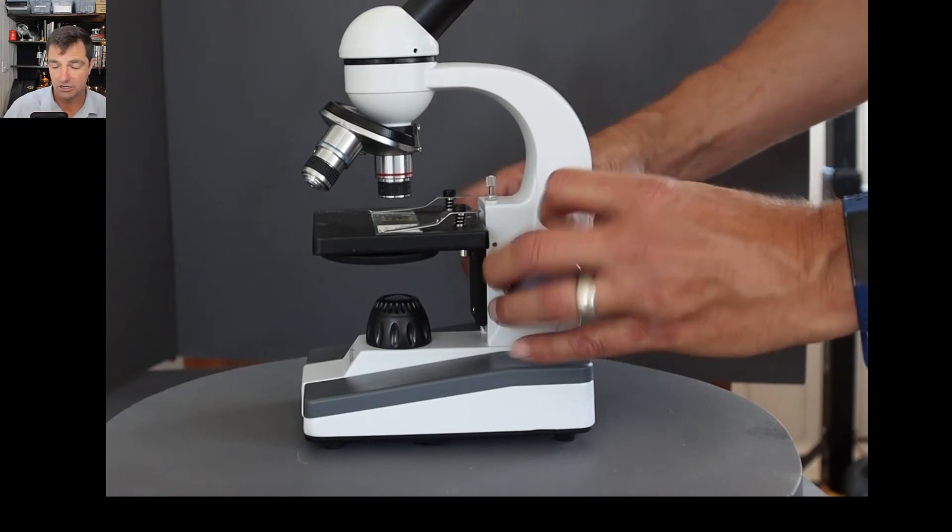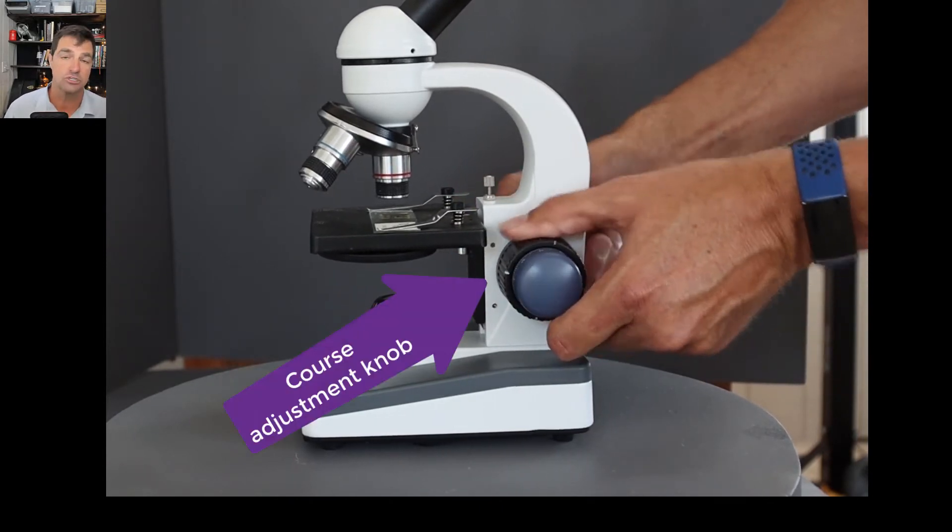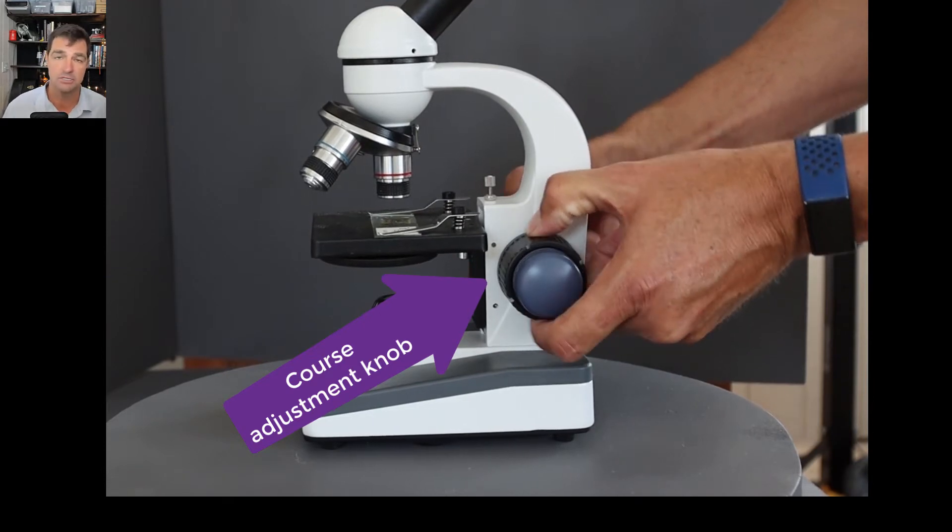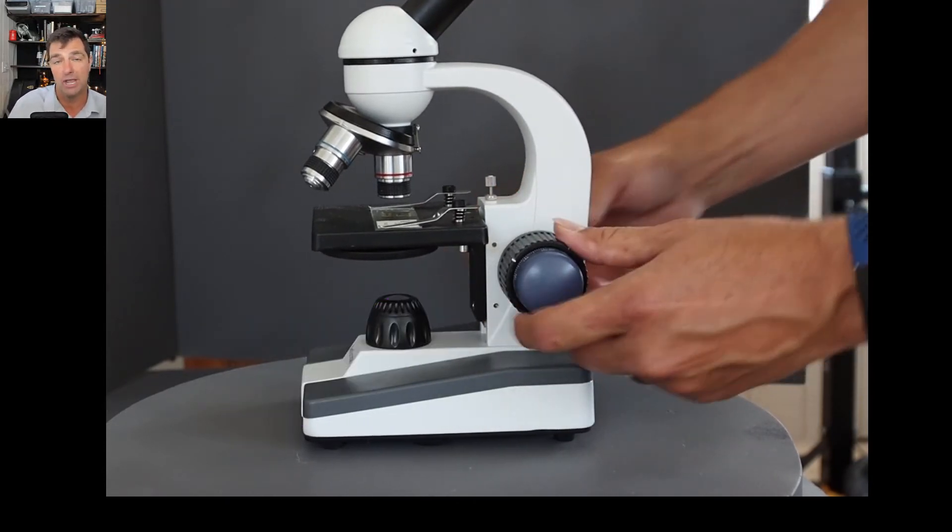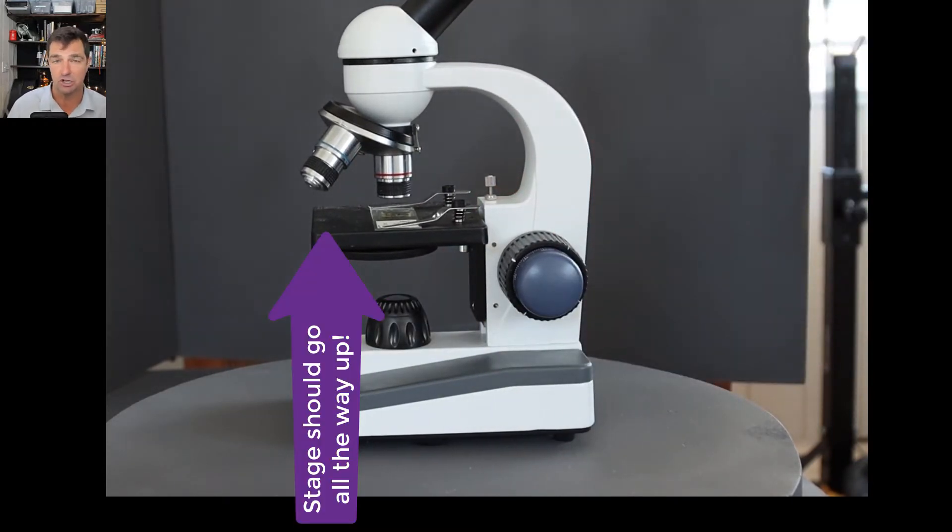Put your slide on and turn the stage using the course adjustment knob, the innermost larger knobs, and turn the stage all the way up. Do all this without even looking through the microscope.